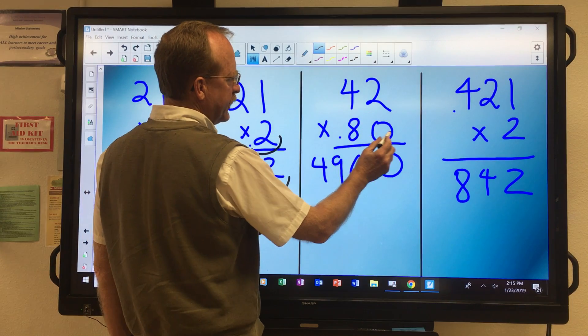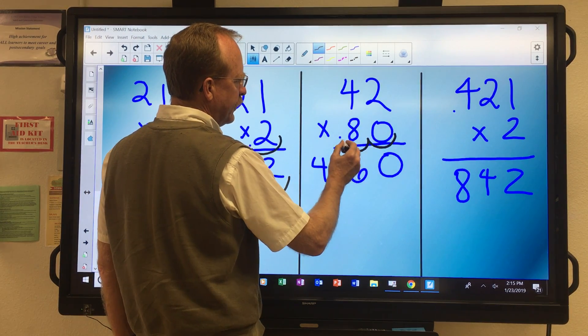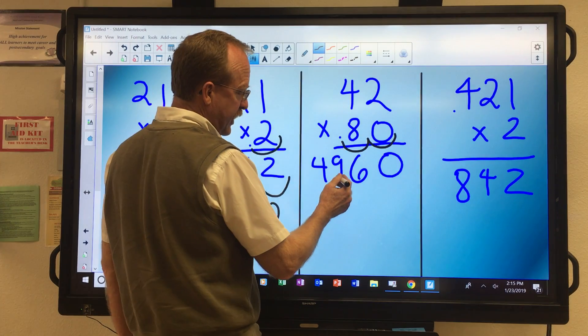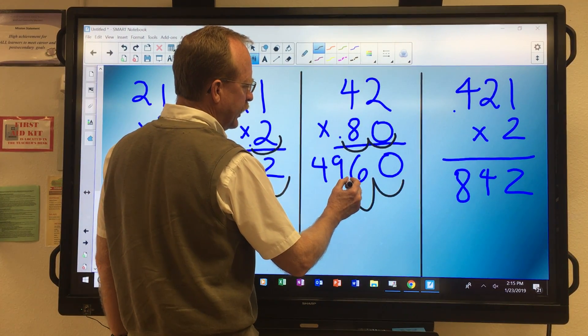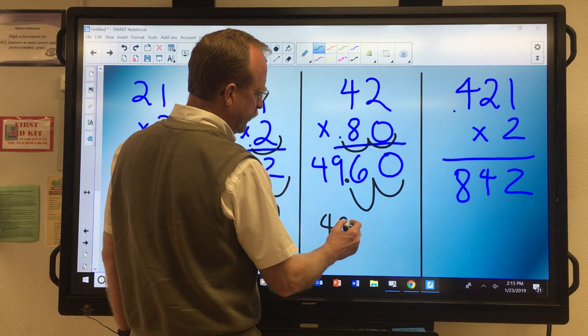Here, you'll notice it's 1, 2. So in my answer, which is 4960, I come over 2, 1, 2, and I put my decimal there.